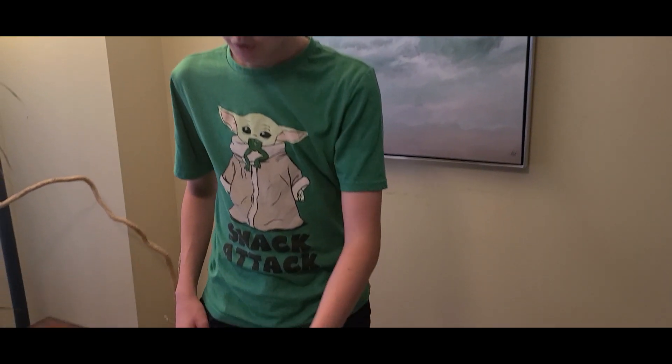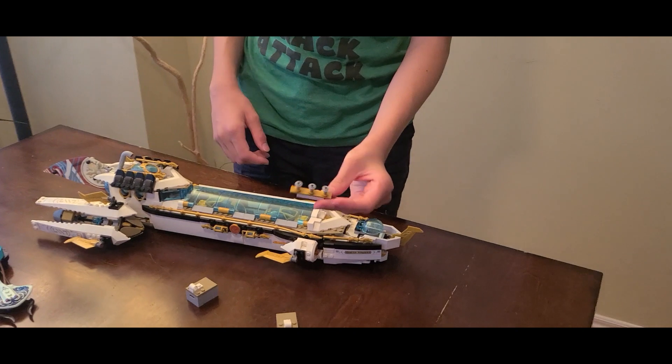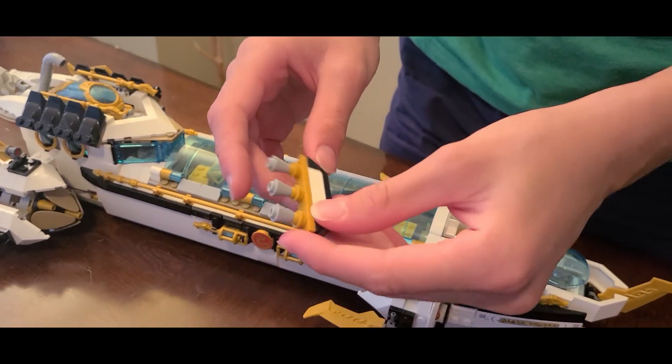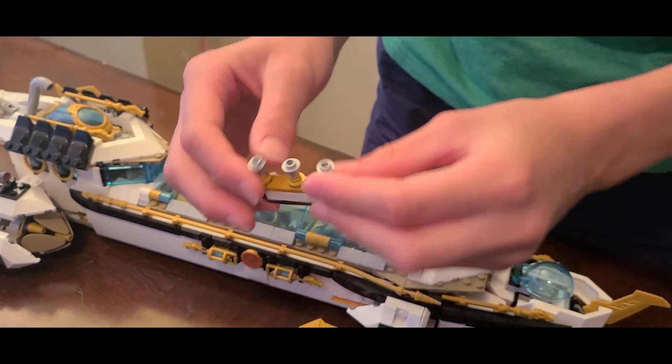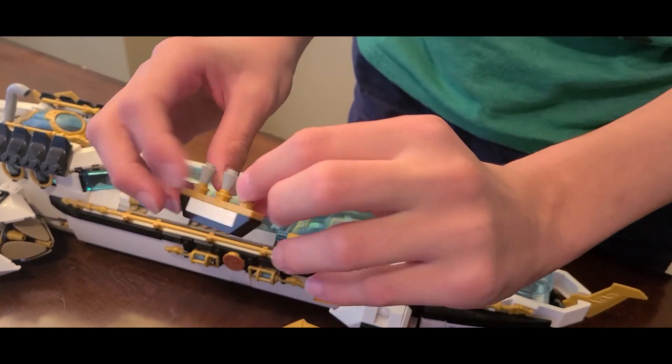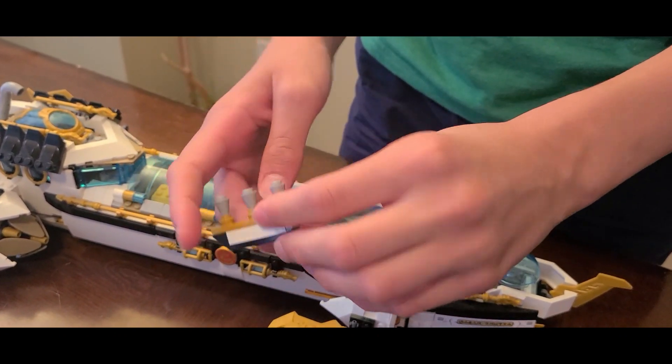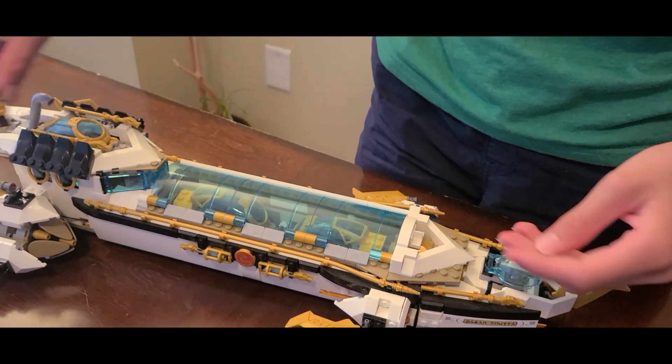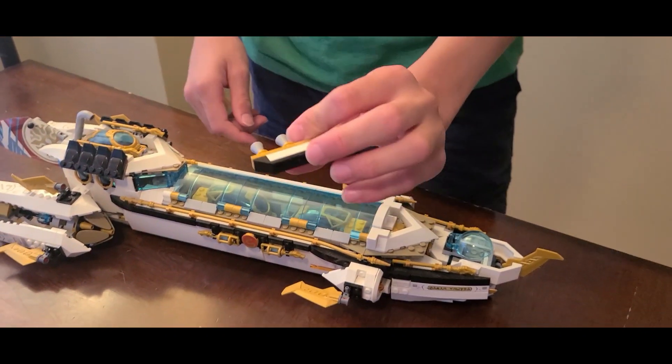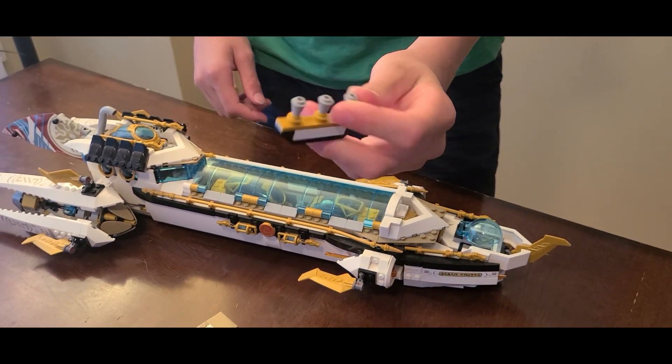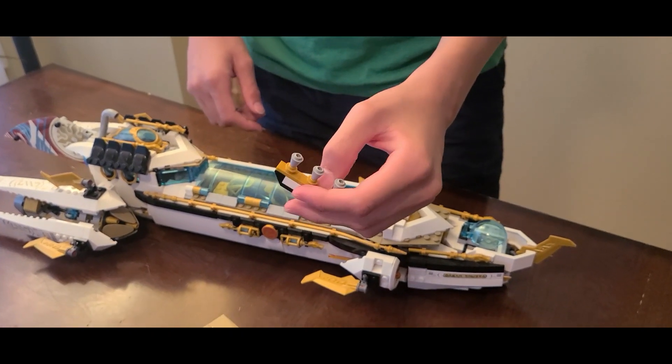So we've looked at the minifigures, let's look at the builds now. Let's do the side builds, so let's start with this. I don't actually know what this is. Is it like a cup holder? Is it a chandelier? I don't know what it is. I don't think there's a place to connect it. If you know what it is, tell me, I don't know what this is honestly.